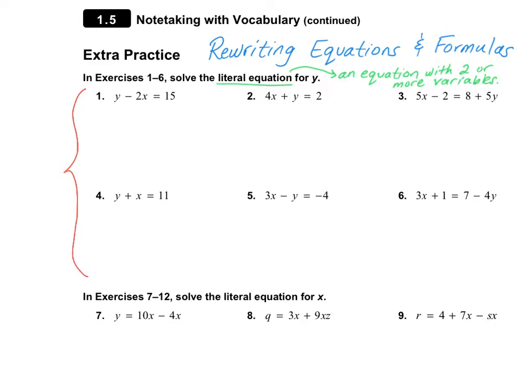When you are solving a literal equation for a variable, what you need to do is draw your line and then circle the variable that you want to solve for. In this case, we're solving for Y, so I'm going to circle the Y. That means I need to get rid of the minus 2X, so I'm going to add 2X to both sides of the equation.